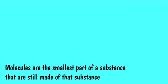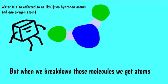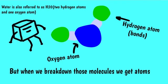Molecules are the smallest part of a substance that are still made of that substance. For example, a single water molecule would still melt when left out in the sun. But when we break down those molecules, we get atoms. Water is also referred to as H2O, two hydrogen atoms and one oxygen atom.